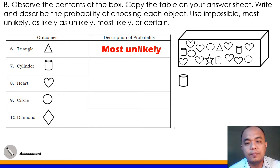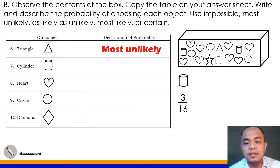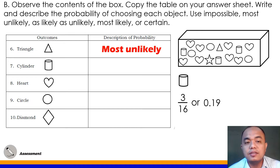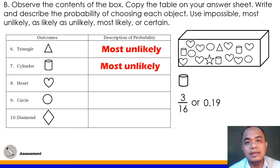Number 7: Cylinder. Inside our box we have 3 cylinders out of 16. 3 divided by 16 equals 0.19. Since 0.19 is still near impossible on our scale, the correct answer for number 7 is most unlikely.